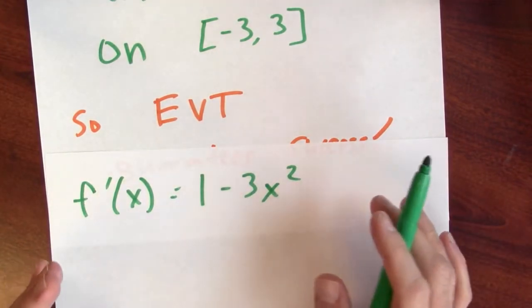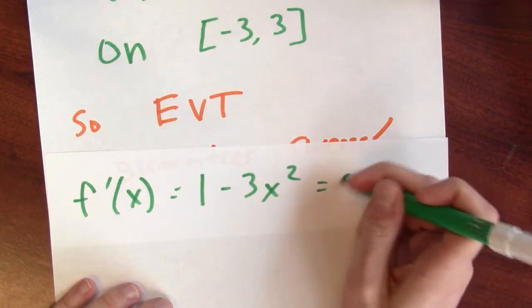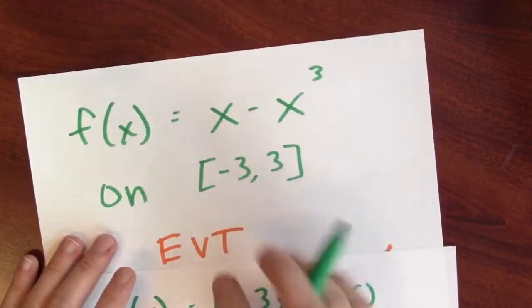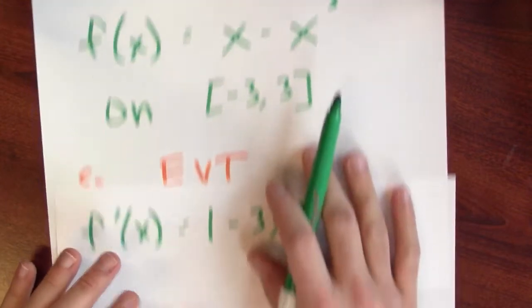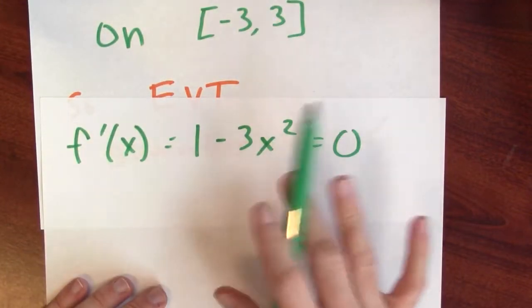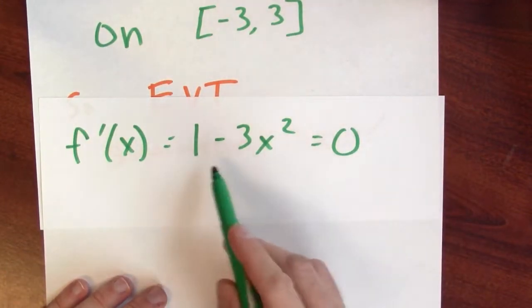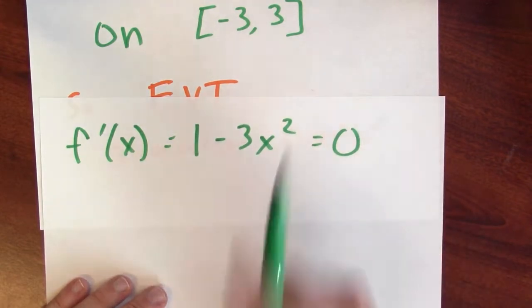I'm looking for places where the derivative is equal to 0 or the derivative doesn't exist. Well, this function is differentiable everywhere, so there's no critical points where the derivative doesn't exist. But there are going to be some places where the derivative is equal to 0. Let's find them now.